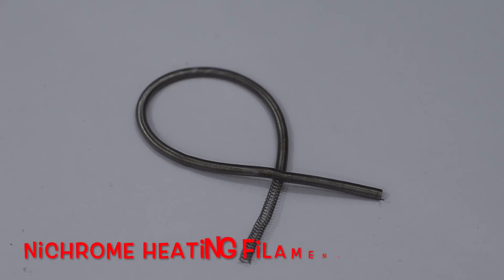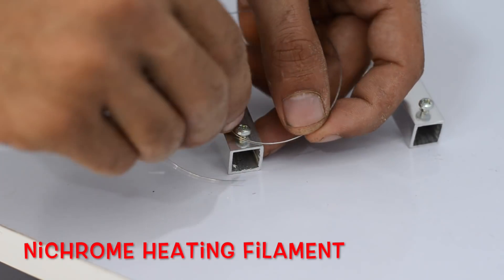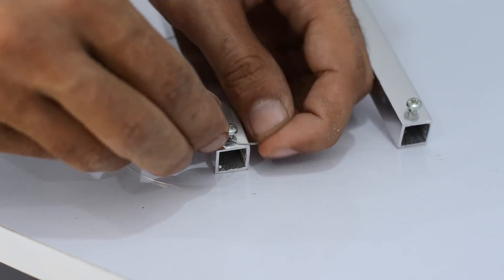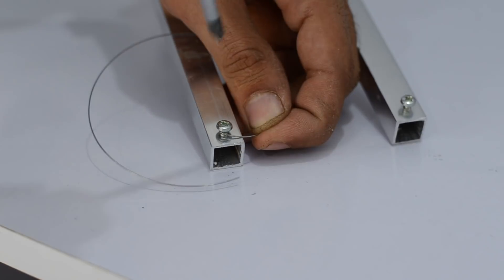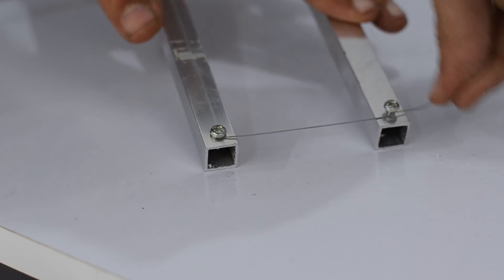The heating filament is nichrome wire that is usually used in room heaters. The wire is straightened and then connected across the arms of the foam cutter. With that being done, our foam cutter is ready to slice foam sheets.